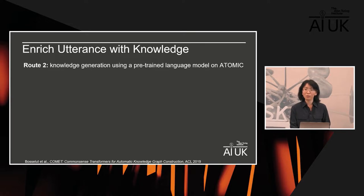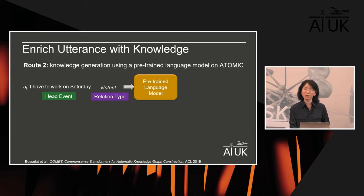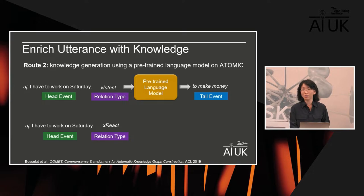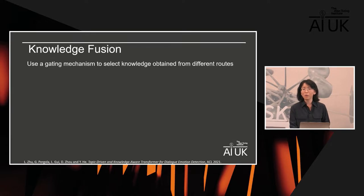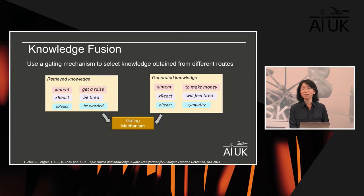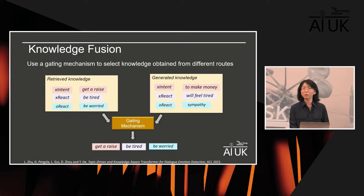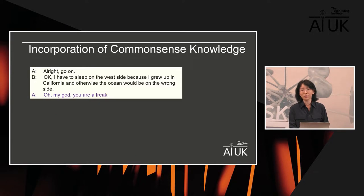Alternatively, we can generate knowledge using a pre-trained language model trained on ATOMIC. The input utterance is used as the head event, paired with a desirable relation type, and fed into the language model to generate common sense knowledge for any relation type of interest. Once we have knowledge from different routes, we use a gating mechanism to selectively choose from the knowledge sources, giving us the final set of common sense knowledge for emotion reasoning.